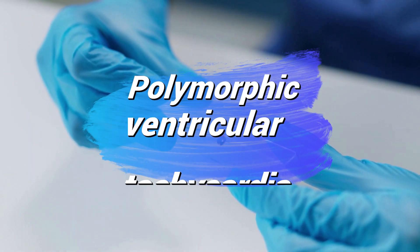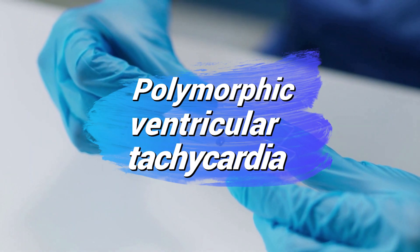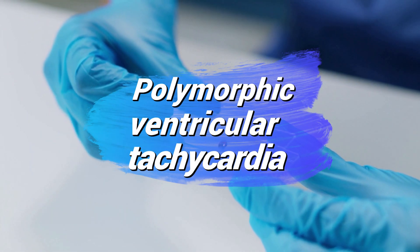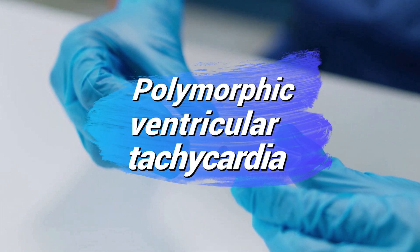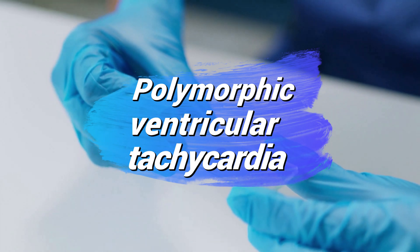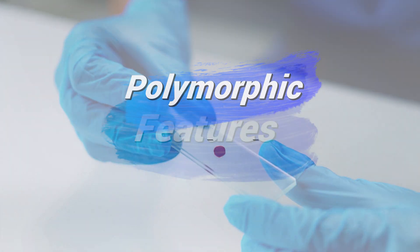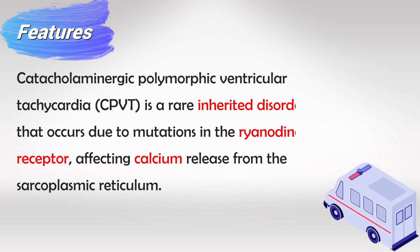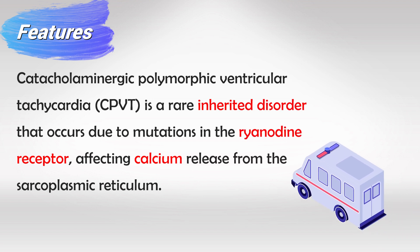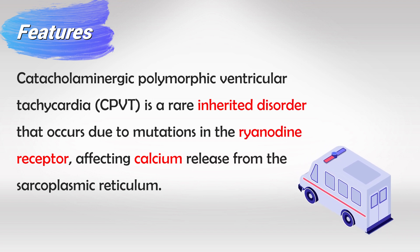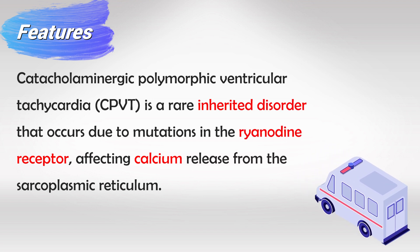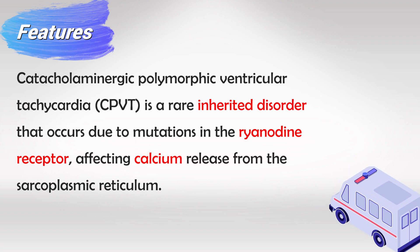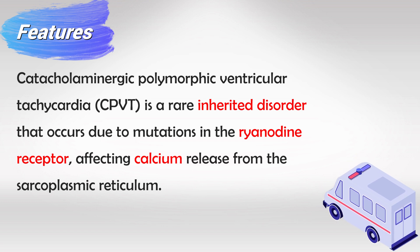Welcome back. In this video I'll teach you everything that you need to know about polymorphic ventricular tachycardia. This condition is very important and you will see it everywhere. It is especially interesting as it is caused by a specific mutation that affects calcium release and the ryanodine receptors. It is inherited, so we expect to see it in multiple family members.